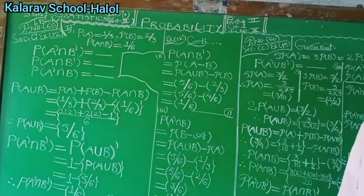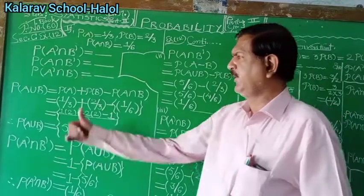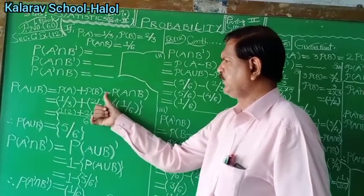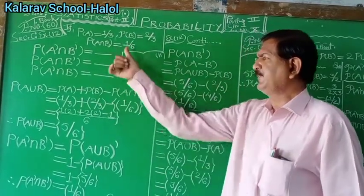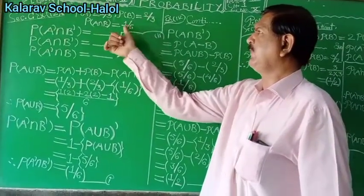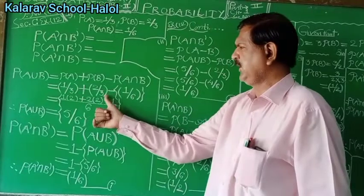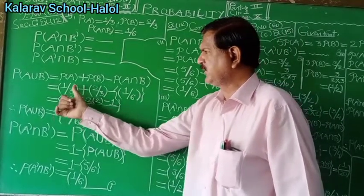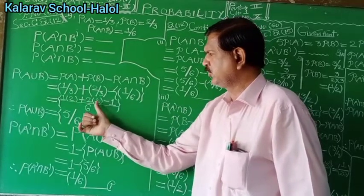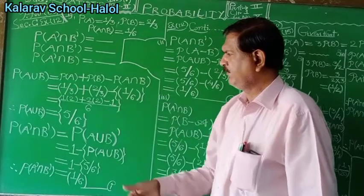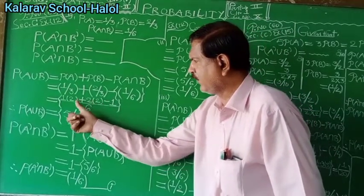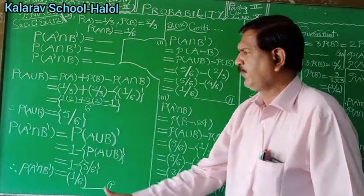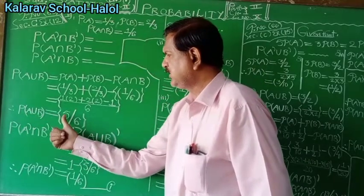Now by using the addition rule of probability — probability of A union B equals probability of A plus probability of B minus probability of A intersection B. Substituting the values: 1/3 plus 2/3 minus 1/6. Taking LCM as 6: 2/6 plus 4/6 minus 1/6 equals 5/6. Therefore probability of A union B is 5/6.